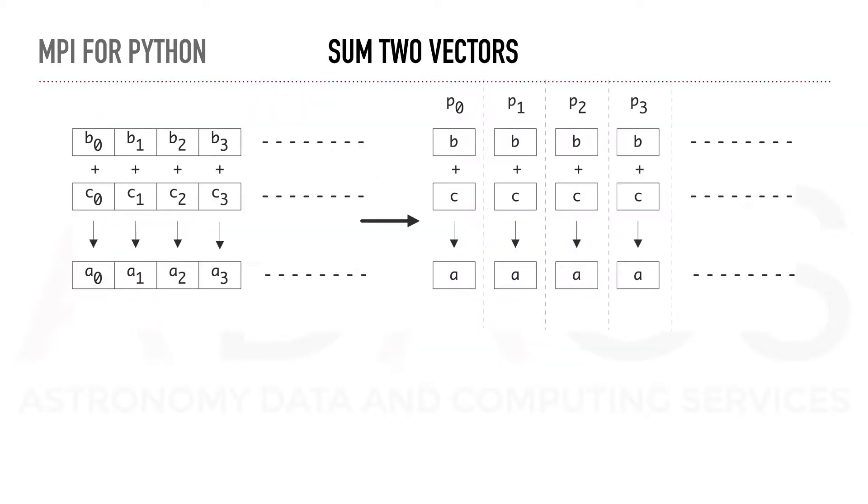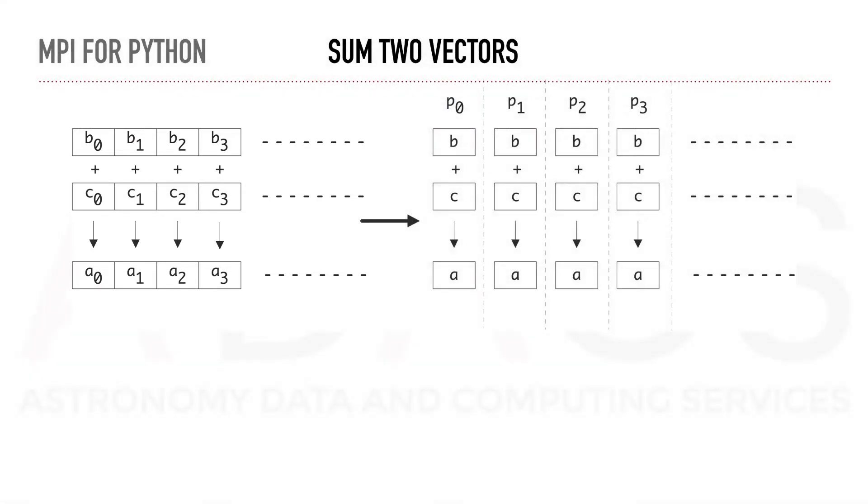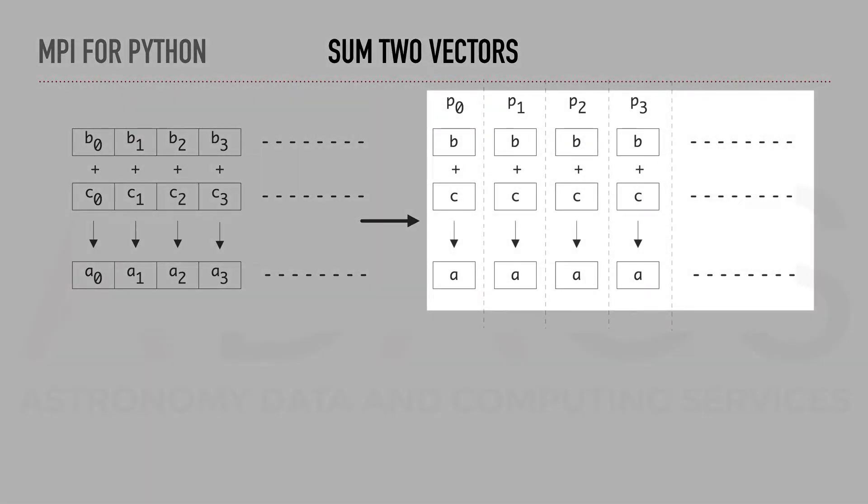Now that we know the basics, let's consider the example of summing two vectors. When dealing with only one processor, we would proceed by computing each summation one after the other. In parallel, instead, we will split this summation on several processes and gather all the results together at the end.